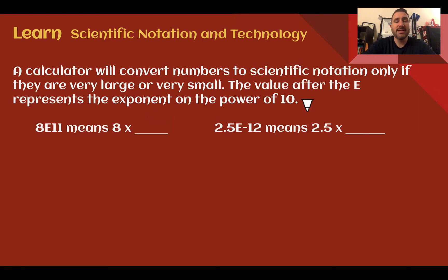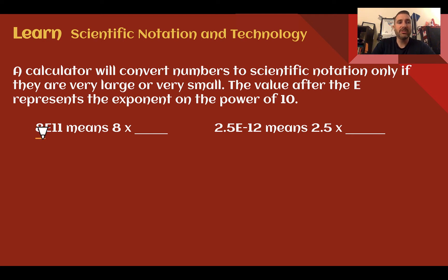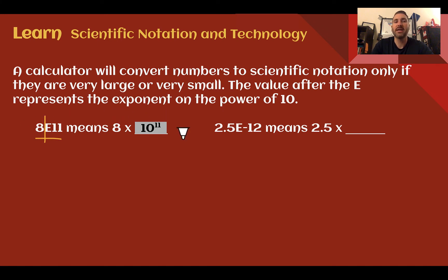Scientific notation and technology. On a calculator, it will convert numbers to scientific notation only if they are very large or very small — too large for the calculator to just show you. Once the number is too large or too small, it's going to look something like 8e11. The e is like the multiply by 10, and the number after is the power, so 8e11 means 8 times 10 to the 11th. Same thing happens with a negative exponent: 2.5e-12 means 2.5 times 10 to the negative 12.